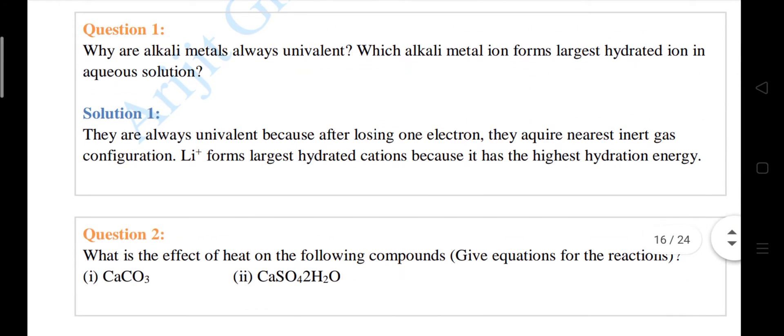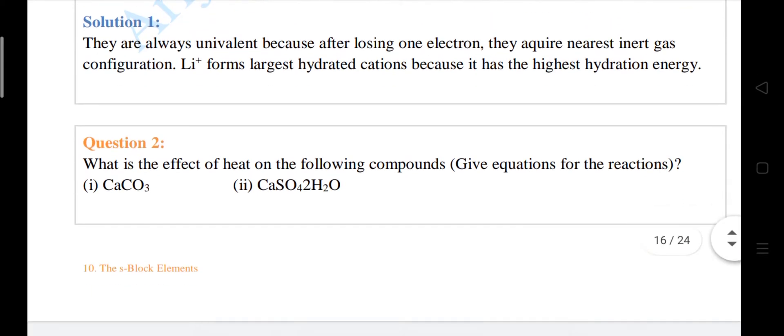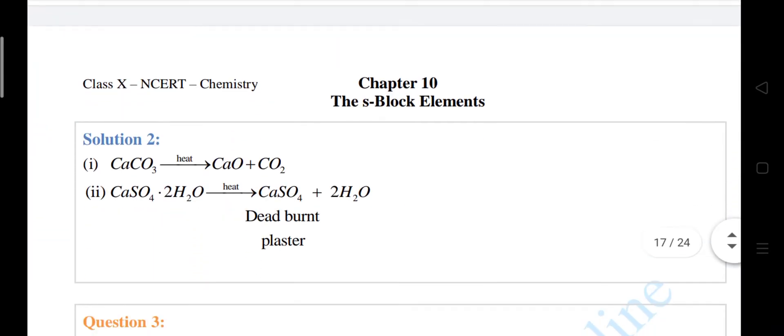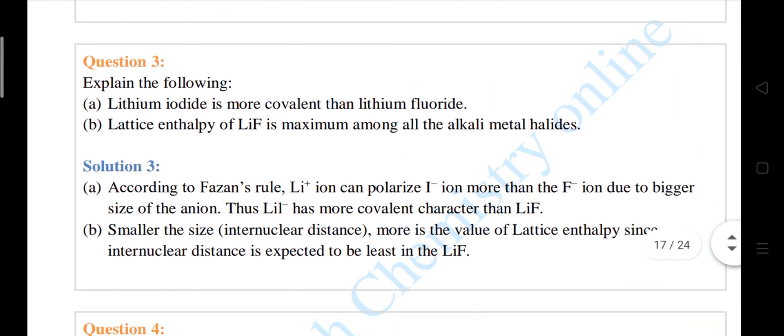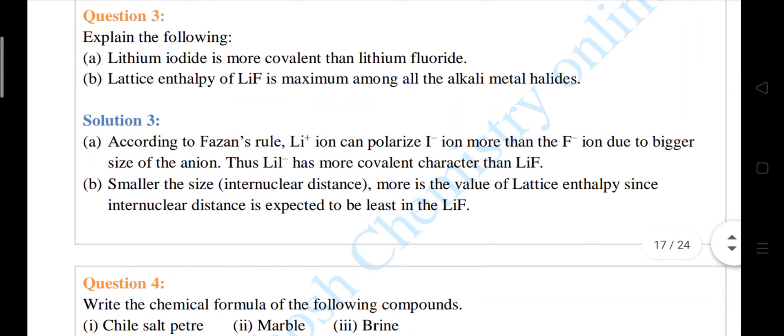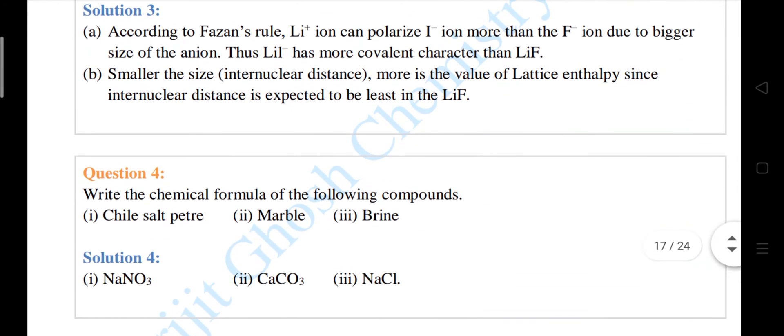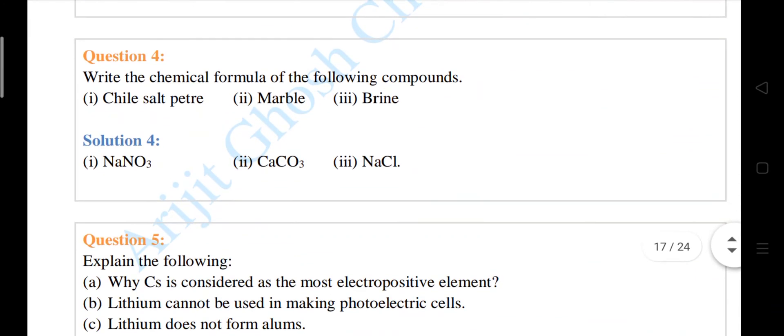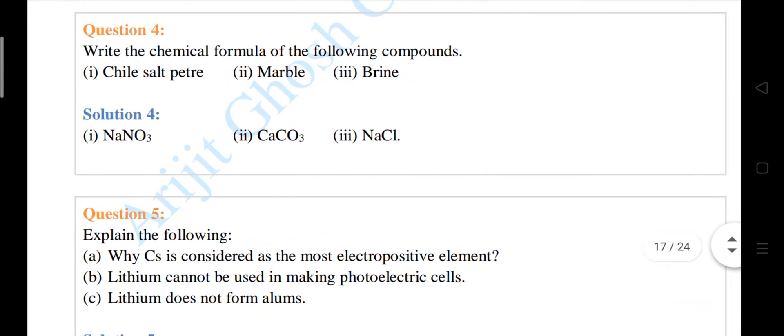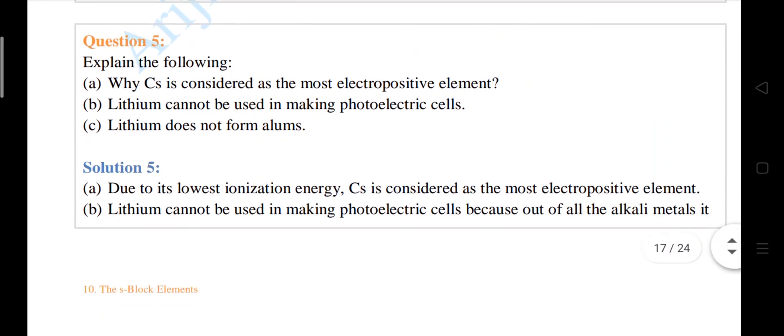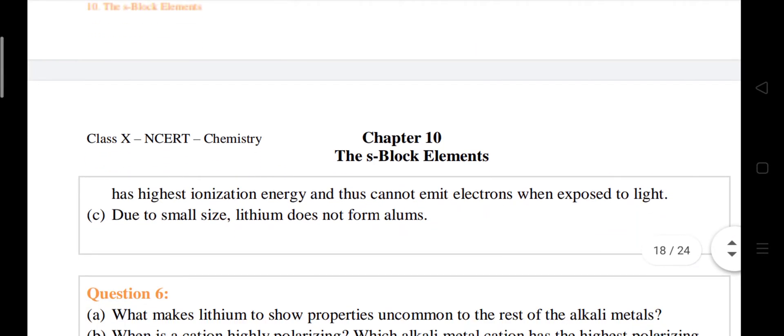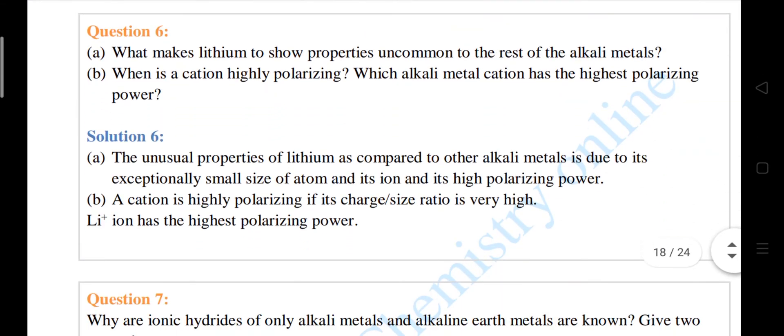Next, short answer type questions, question number 1, question number 2, next is question number 3, these are the explain why type questions is to come, some Fajans rule is applied over here, it comes from the chemical bonding chapter, this is question number 4, this is question number 5, this is question number 6.